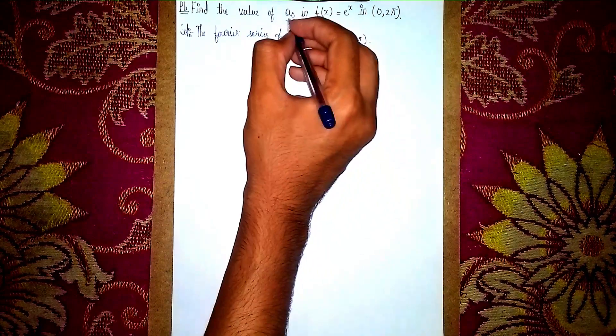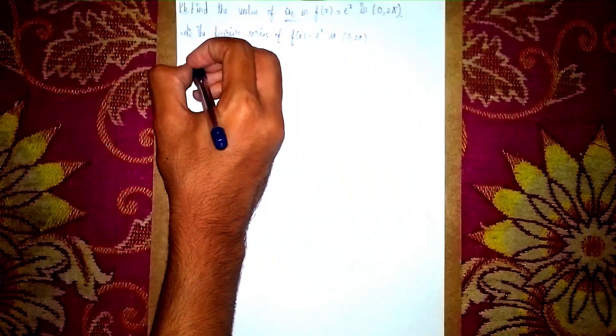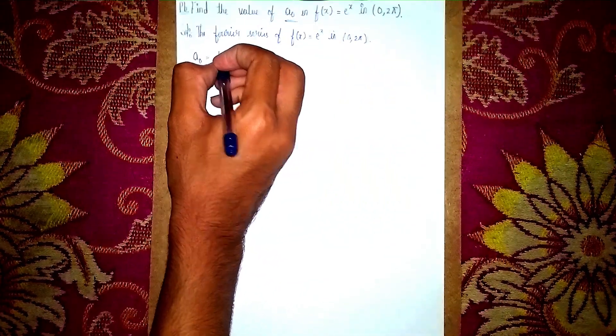Now we're finding a₀. The a₀ formula is, remember, 1/π...